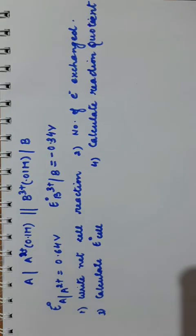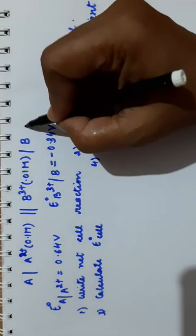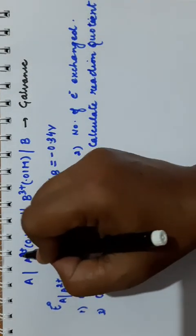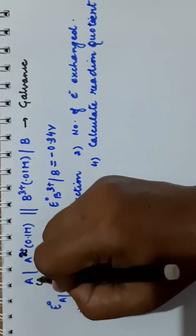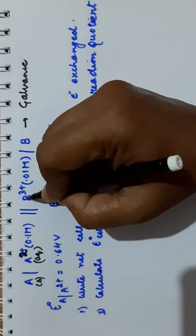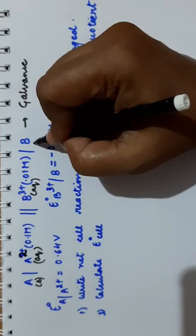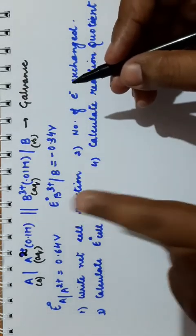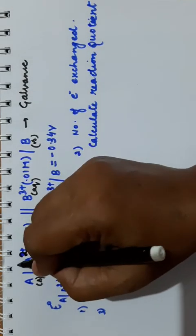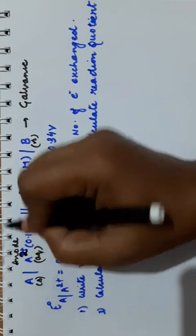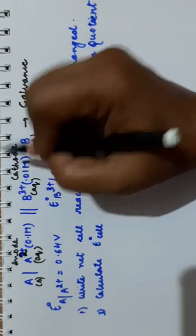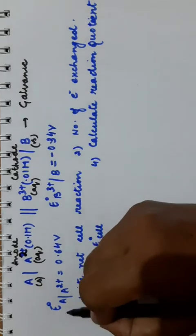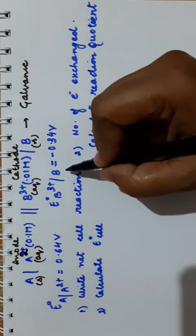Now, a question is given. The representation of the galvanic cell has two species A and B. A is changing to A²⁺ — it is in solid state and A²⁺ is aqueous — so A undergoes oxidation. B³⁺ in aqueous solution is changing to B, so B undergoes reduction. By convention, the left side is anode and the right side is cathode. Standard potentials are given to you.